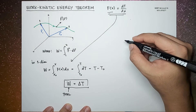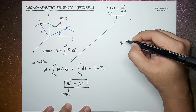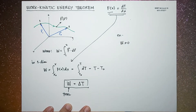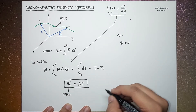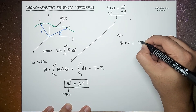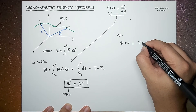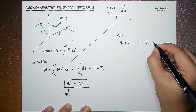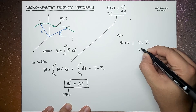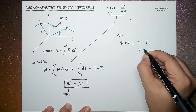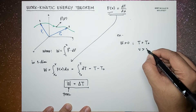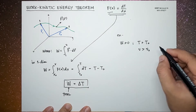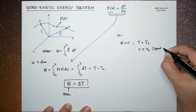This shows that if the work done on the particle is positive, then by this relationship the final kinetic energy is greater than the initial kinetic energy. This tells us that the speed after the work has been done is greater than the speed before — so the particle speeds up.